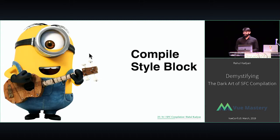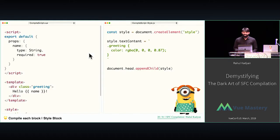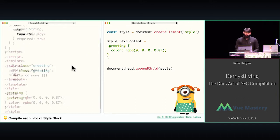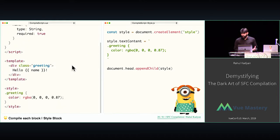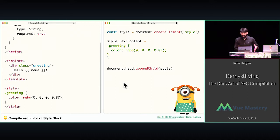Now let's go to style compilation. We take the content of the style block. This JavaScript will, at runtime, create a DOM element style, put all the content of that style block as its text content, and append it to the head. Style compilation done.